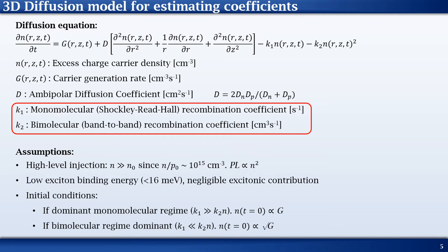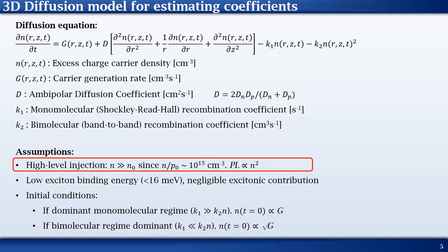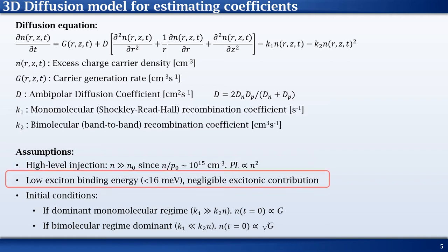The coefficients k1 and k2 respectively represent the monomolecular and bimolecular recombination rates. Here are some assumptions we make in our model. Our experiments are mostly conducted at high fluences. We safely assume that the excess charge carrier population is much higher than the intrinsic population. We also assume free carriers as perovskites exhibit very low binding energies under room temperature.